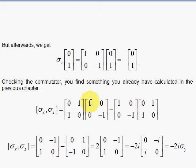Well, 0 times 1 plus 1 times 0 is 0. And 0 times 0 plus 1 times negative 1 is negative 1. 1 times 1 plus 0 times 0 is 1. 1 times 0 plus 0 times negative 1 is going to be 0.